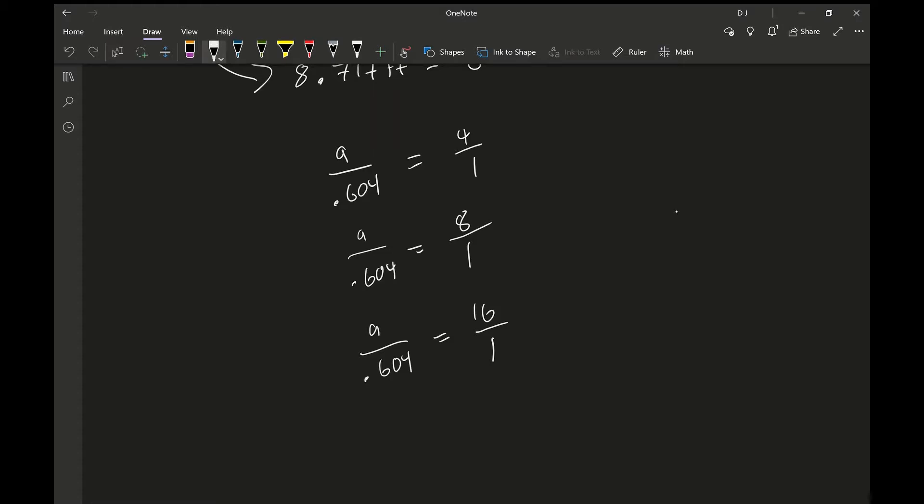So this one, four times 0.604, I get 2.416. So 2.416 would estimate to two, so this one would imply the answer would be eight feet, eight inches, and two fourths. But two fourths is the same as one half, so eight foot, eight and one half inch.